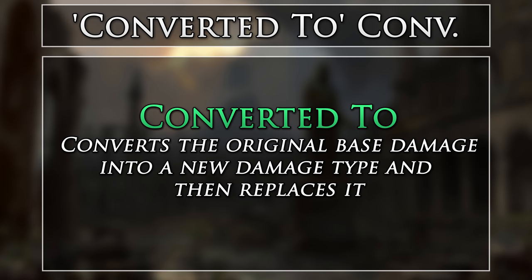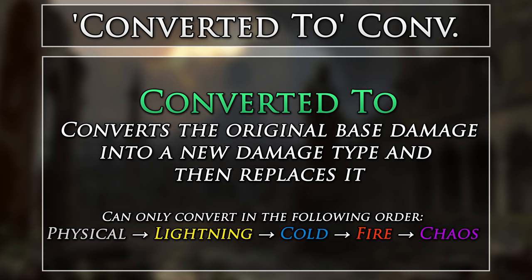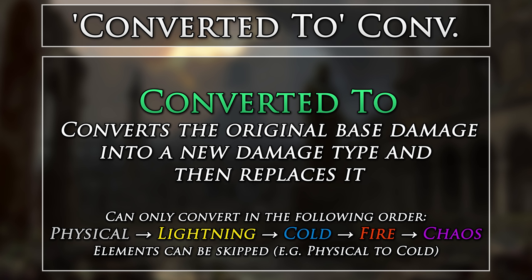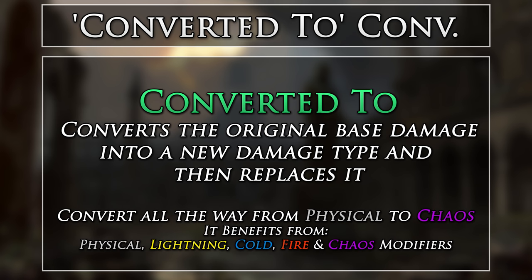Converted To converts the original base damage into a new damage type and then replaces it. Damage can also only be converted in a set order — types of damage may be skipped, such as with the Hrimsarrow Gloves converting physical to cold, but you may never go in the reverse direction. This avoids feedback loops and makes conversion deterministic. Again, the most powerful part of both conversion types, but especially converted to, is that converted damage is affected by the modifiers of both the damage type it was converted from and the new damage type it is. This means that if you convert all the way down the chain to chaos, the chaos damage gained through the conversion will benefit from modifiers to physical, lightning, cold, fire, and chaos. Performing this specific conversion is almost impossible and very difficult to make work. However, there are many other 100% conversions where you can make full use of all possible modifiers and elemental penetrations for that converted damage type, granting you many scaling options.